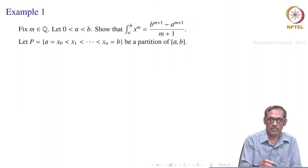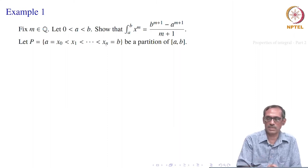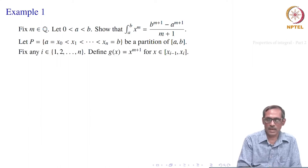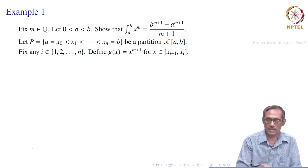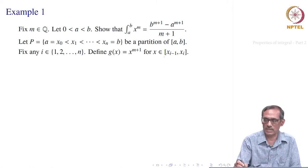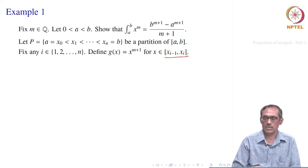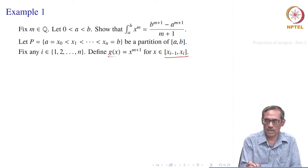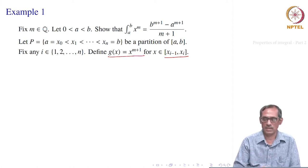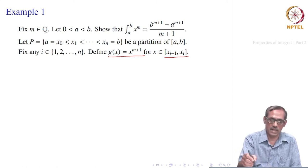We take a partition of the interval a to b: x₀ < x₁ < … < xₙ = b. Fix any i between 1 and n, so we are fixing a sub-interval [x_{i−1}, xᵢ]. Now define the function g(x) = x^(m+1). This is a clever way of avoiding how to evaluate the abstract limit of the Riemann sum.